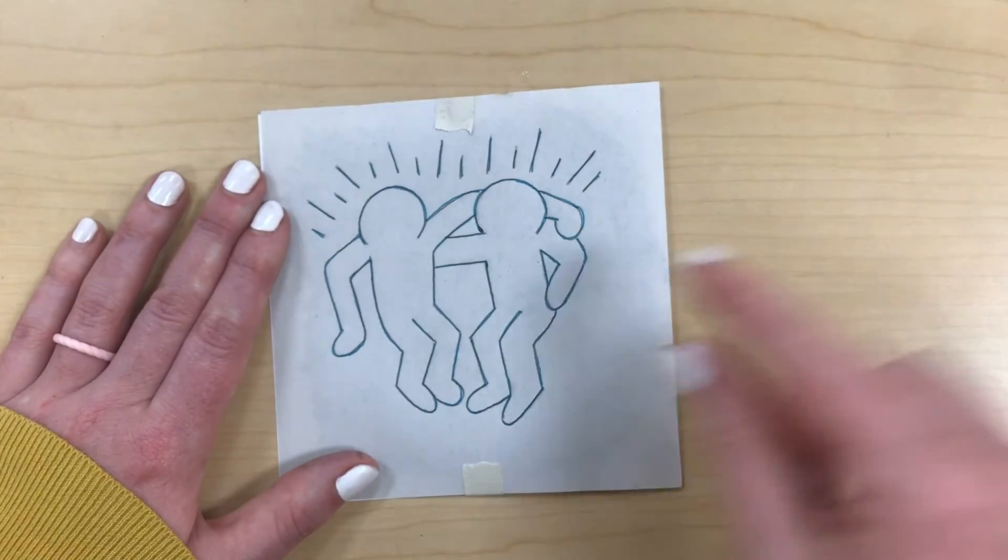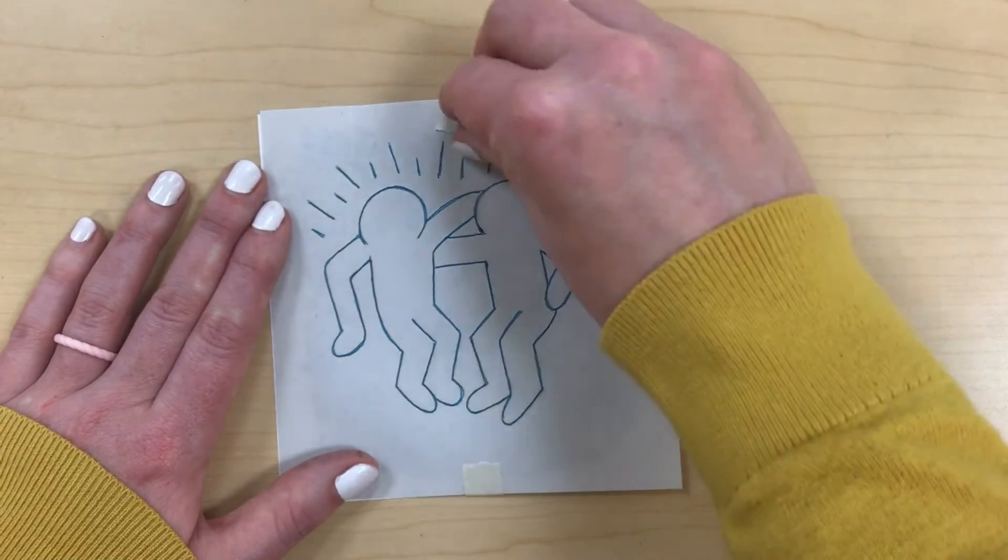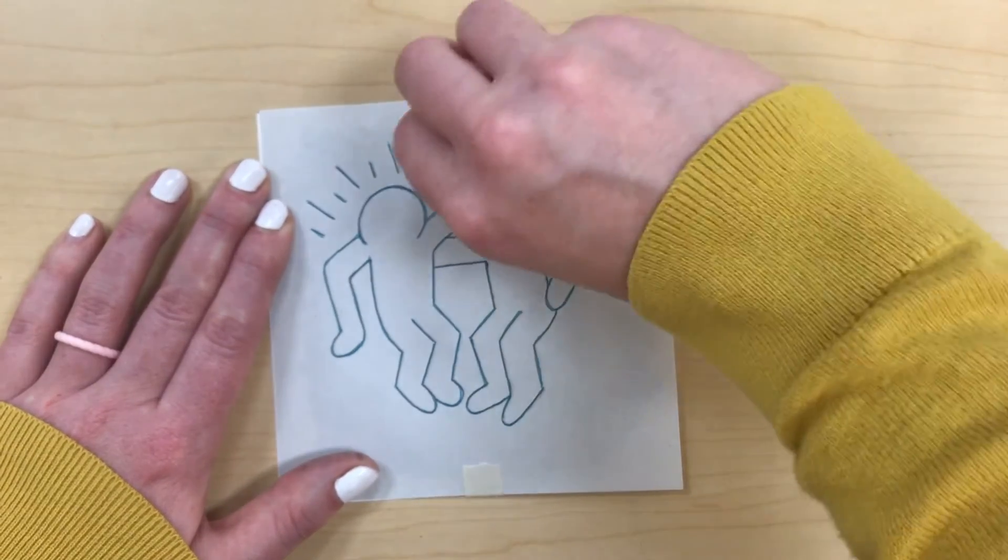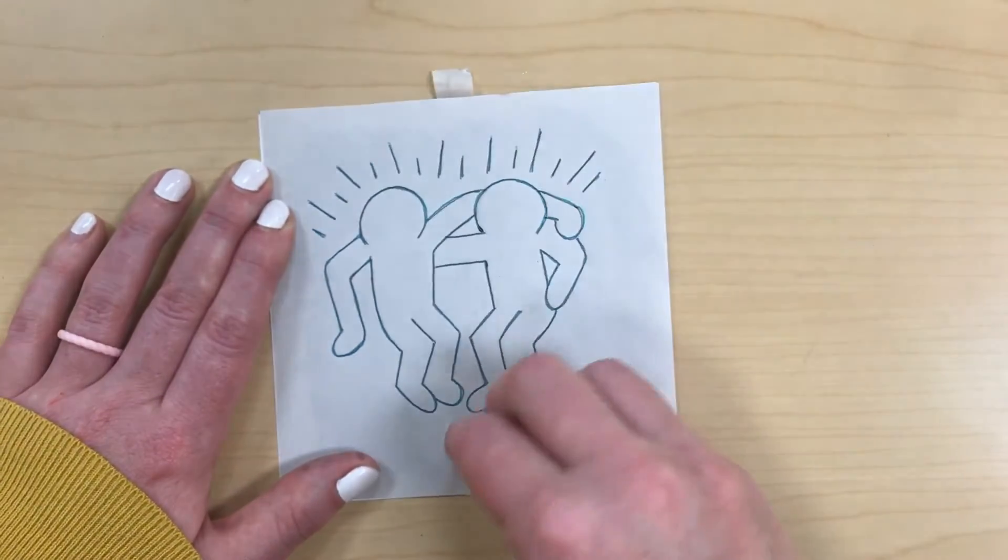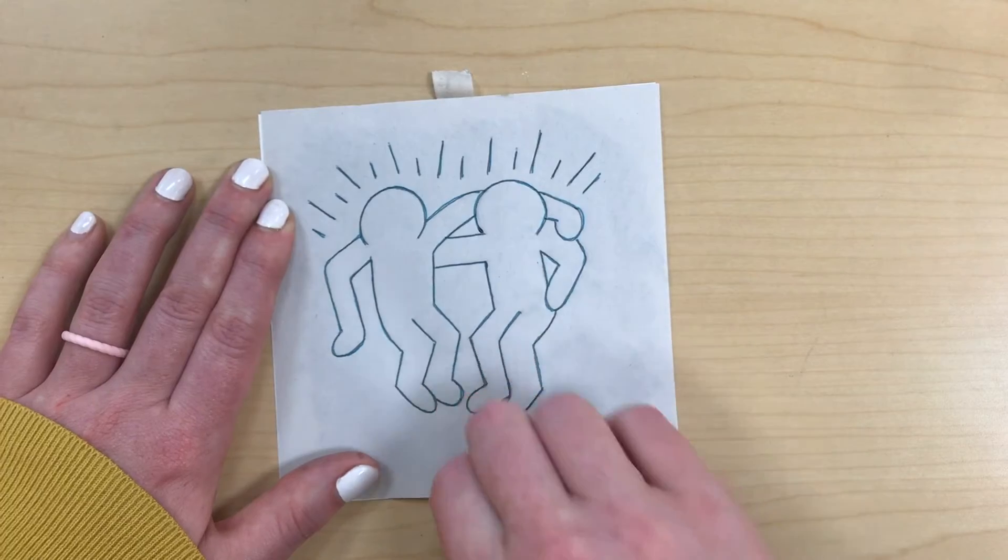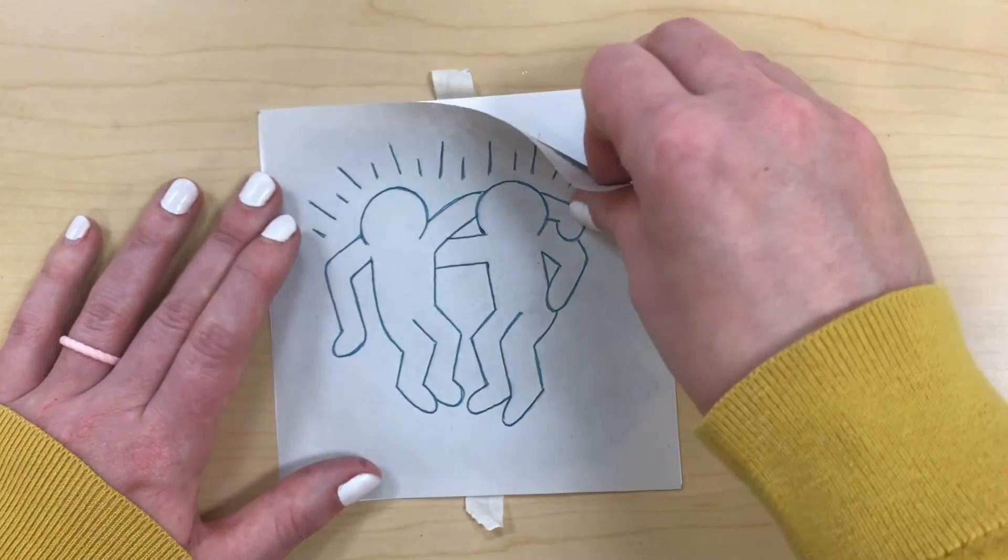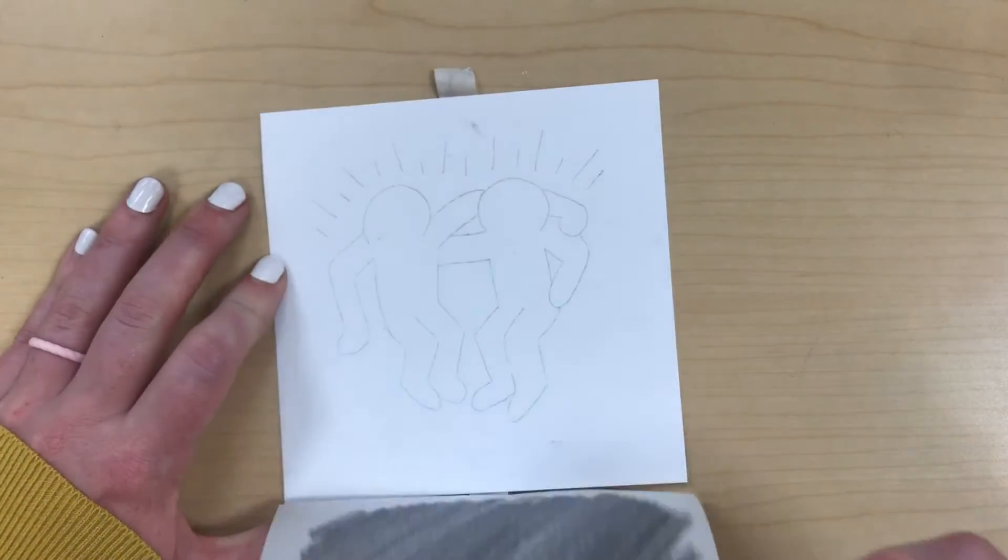The pressure from the pen pushed down on the graphite on the back side of the newsprint and left a graphite image behind. There we go.